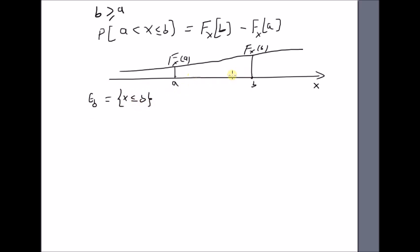Now we can clearly see from the graph that this event can be divided into the union of two disjoint events, which is basically x less than or equal to a, union a less than x less than or equal to b.